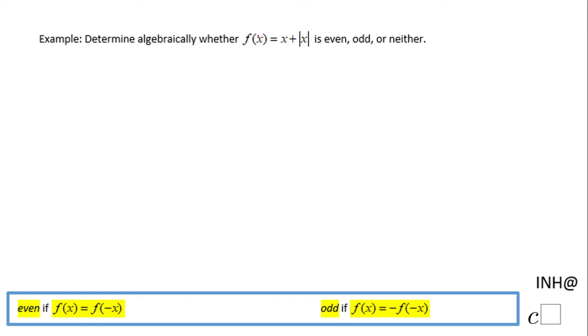Welcome back to C squared. In this example we have the function f(x) = x + |x| and want to see if it's even, odd, or neither. My first step is to use a numerical approach.